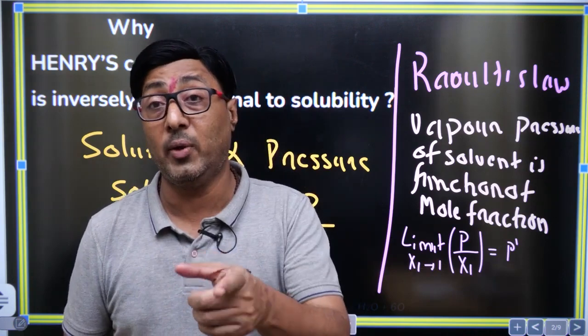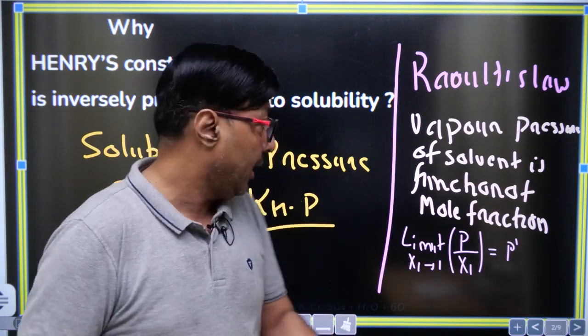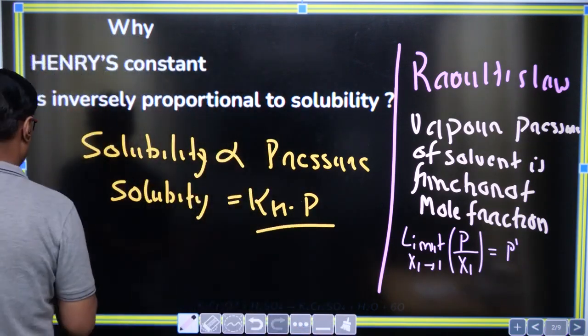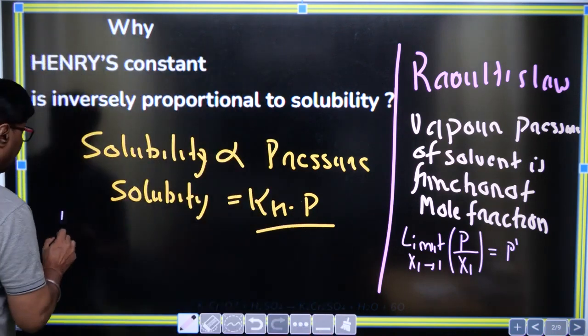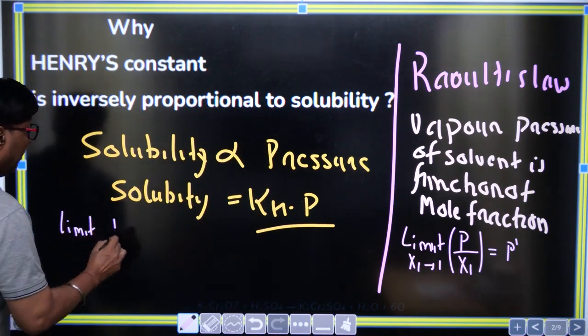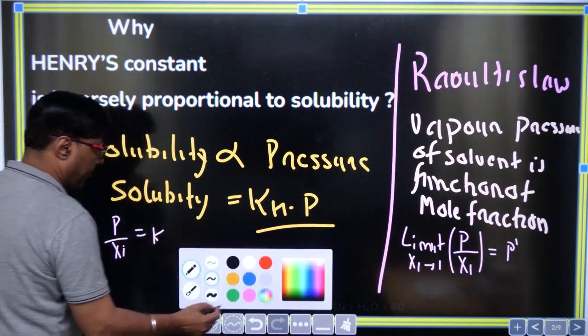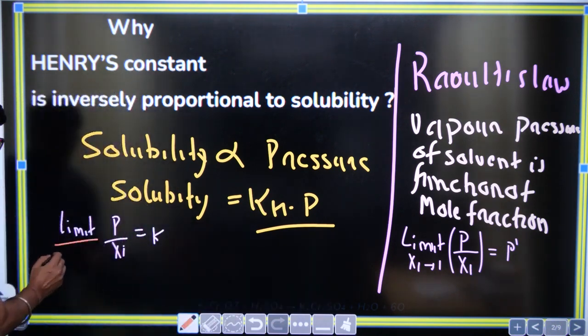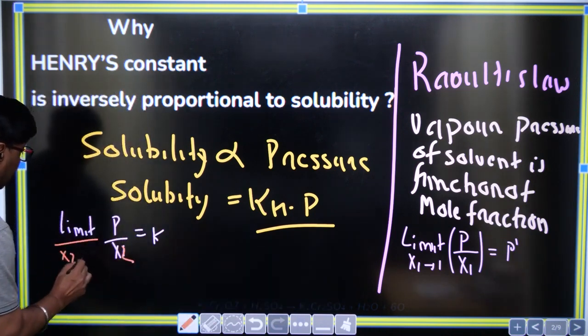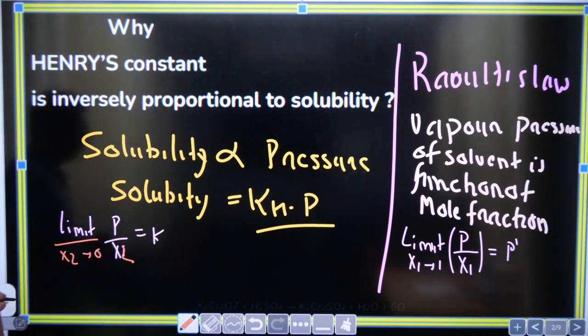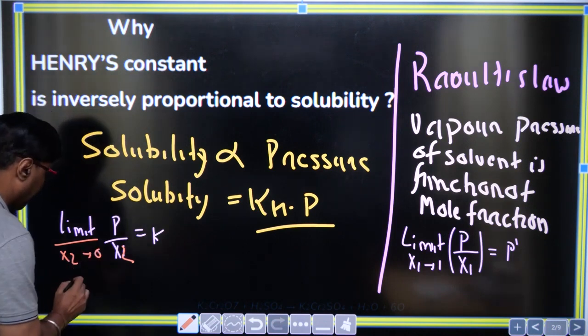Henry's law is going to be doing - limit P by x1 is equal to k, but the most important change is the limit. Let it be x2, so x2 tends to 0. Why? Because solute has been considered, so this line can be written: vapor pressure of solute.